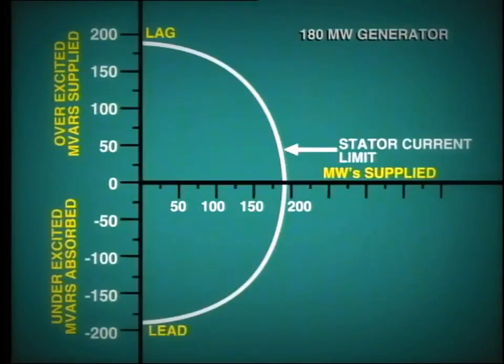This generator capability curve shows us the limitation on MVA due to current in the stator. For example, at this megavar loading, we can only produce this amount of active power to stay within the machine's capability.